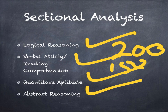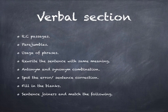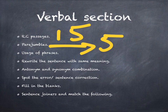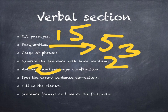Let's understand verbal ability and reading comprehension. In RC passages, you're going to get around 15 questions. In para jumbles, you'll get 5 questions. For usage of phrases, three sentences are given with five options each — you'll get 3 questions there. Rewrite the sentence with the same meaning is self-explanatory; you'll get 2 questions on it. Antonym and synonym — opposite word and similar word — you'll get around 2 questions on those.